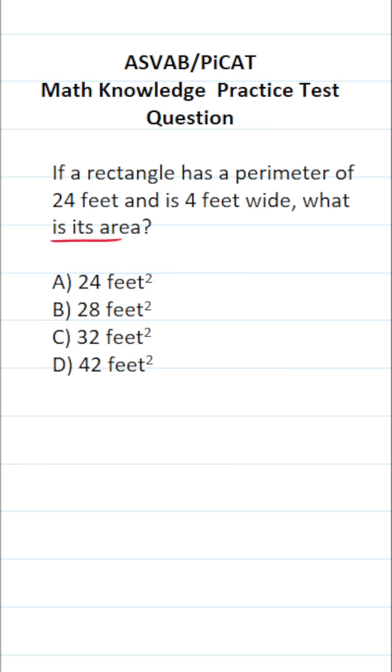So at the end of the day, we're being asked to find the area of a rectangle. And as you should know, that's going to be length times width. Again, on the ASVAB and PiCAT, you're not given a reference sheet, so you do have to commit some of these formulas to memory.